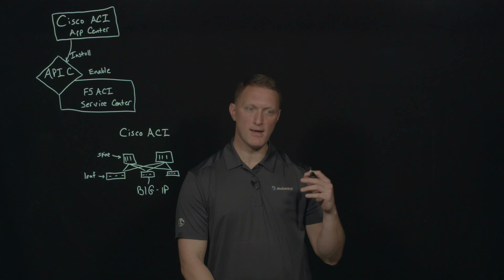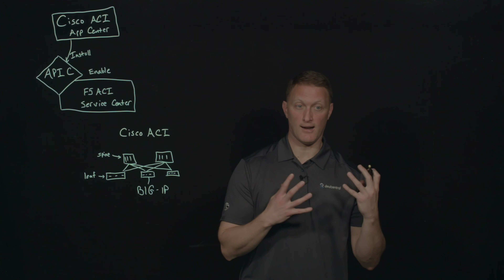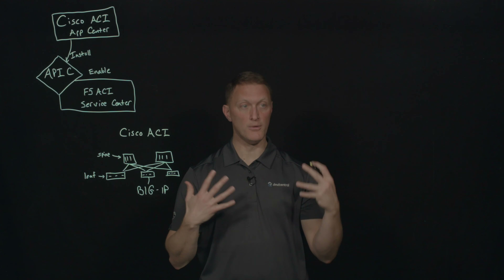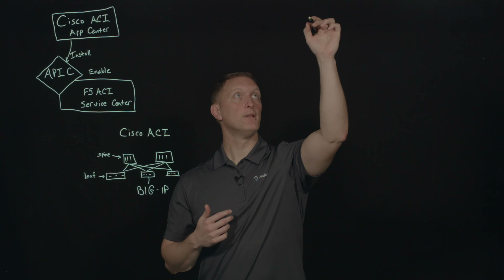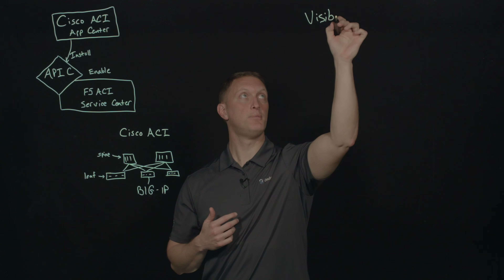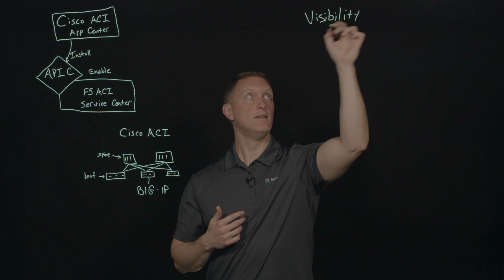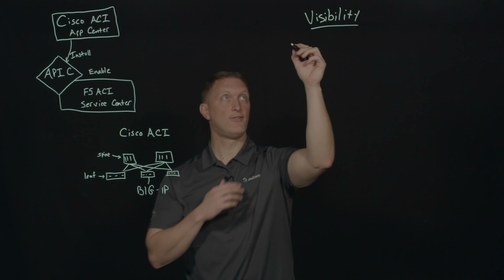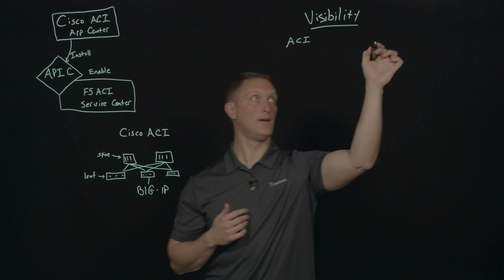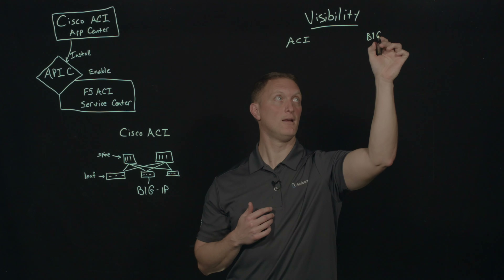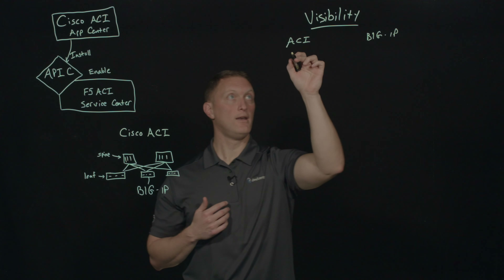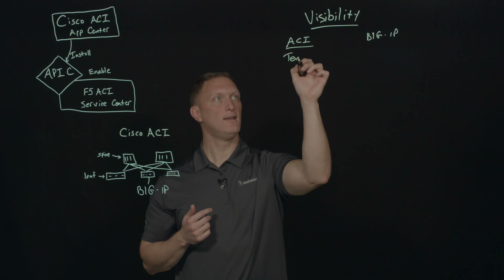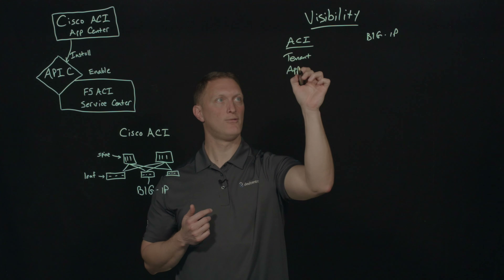There are three main capabilities that I wanted to talk about that this ACI Service Center app gives you. The first one is visibility. From a visibility perspective, on one side you've got ACI, and then over here you've got Big IP. On the ACI side, you're going to have different components — things like a tenant and an app profile.